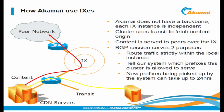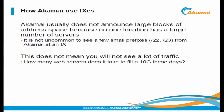Akamai uses internet exchanges differently than most. Akamai does not have a backbone — every single IX instance and every AANP instance we deploy is its own island with its own transit. It pulls content to fill the cache over that internet transit and delivers it locally, with no delivery between different Akamai machines across a private backbone. Akamai does not usually announce large blocks of space from exchange connections because we usually don't have many machines in any one location. A single IP address from a single server can serve close to 10 gigabits of traffic today.